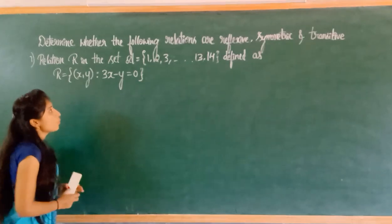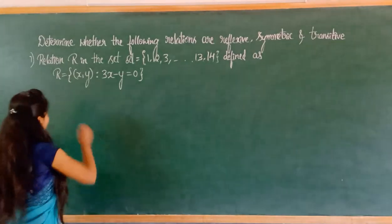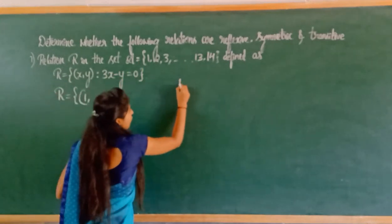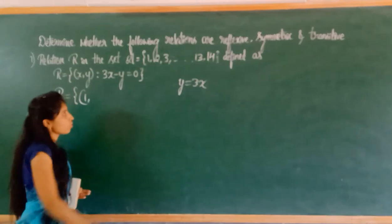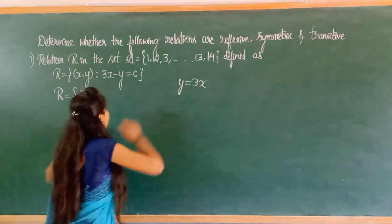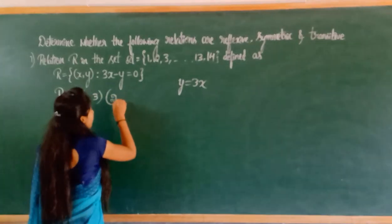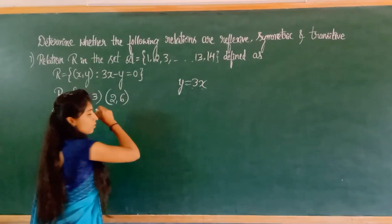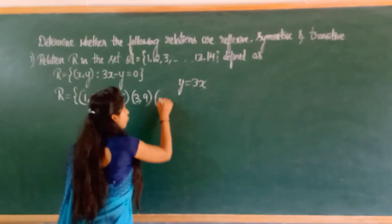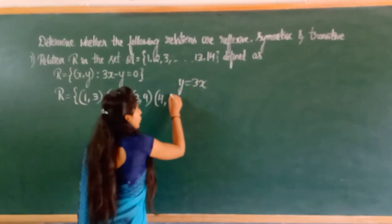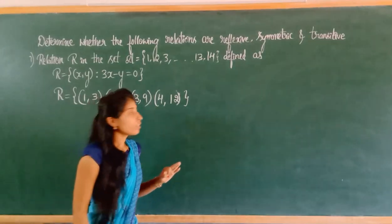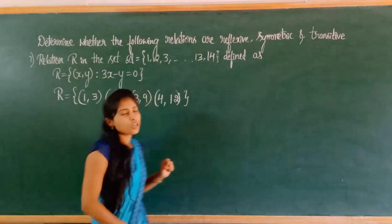First, before checking reflexive, we have to write the relation. R is equal to: if x is 1, then from 3x minus y = 0, y equals 3x. So if x=1, y=3; if x=2, y=6; if x=3, y=9; if x=4, y=12. If x=5, y=15, but 15 is not in the given set. So this is our relation.